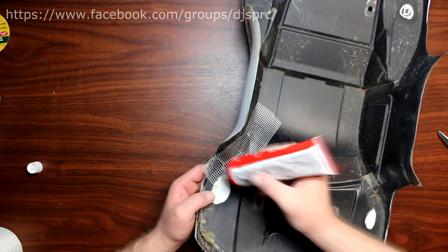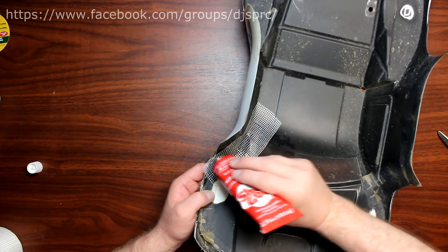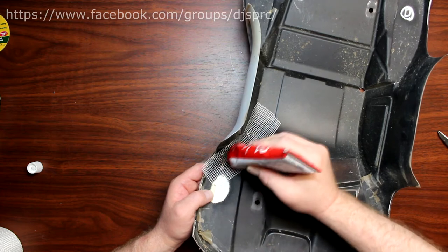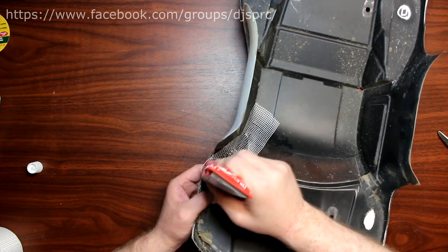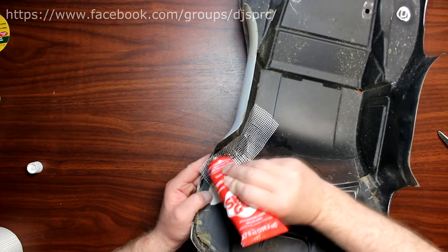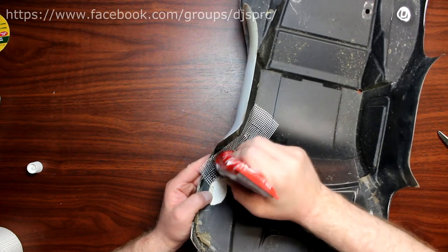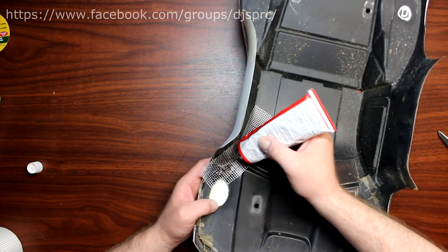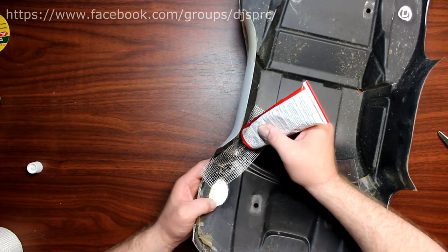Basically what I do is I grab the Shugu and pretty much go anywhere where there's the crack is to fill the Shugu, the Shugu itself and the mesh tape.